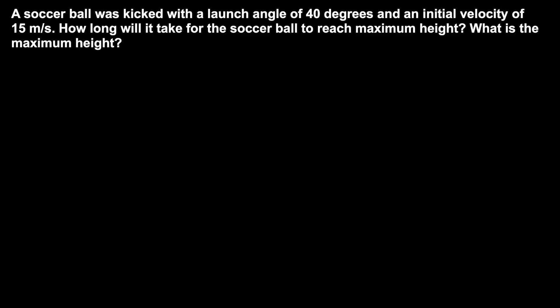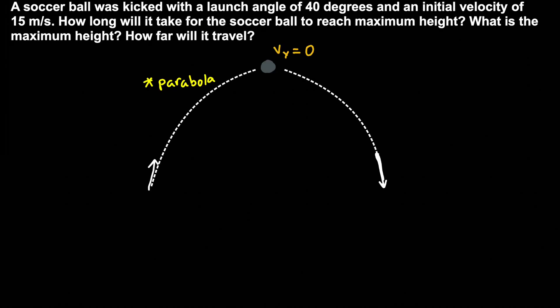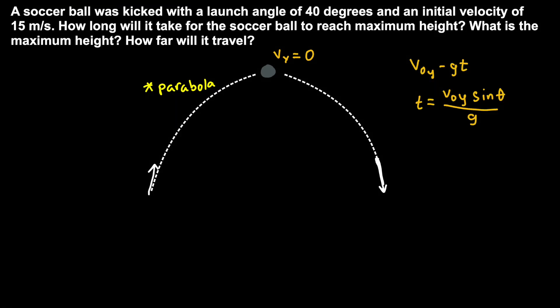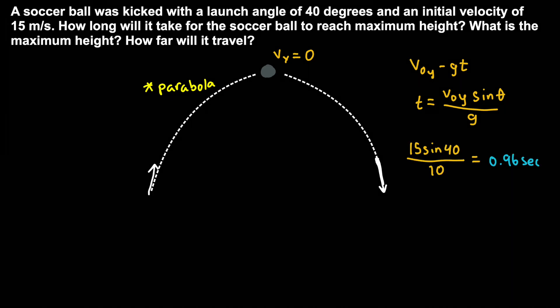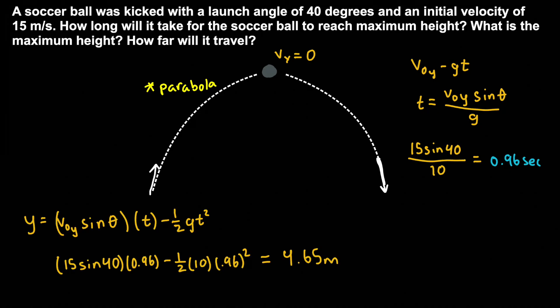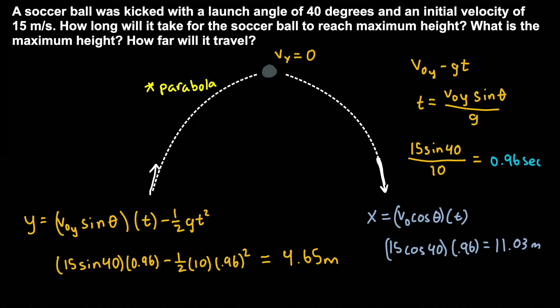The same concept applies when given a launch angle. A soccer ball is kicked with a launch angle of 40 degrees and an initial velocity of 15 m/s. Since vertical velocity is zero at maximum height, we use v₀ sine θ minus gt equals zero to find time: multiplying sine 40 by 15 and dividing by gravity gives 0.96 seconds. To find maximum height, we use the vertical kinematic equation with velocity times sine, getting 4.65 meters. For horizontal displacement, we multiply velocity by cosine 40 and by time to get 11.03 meters.